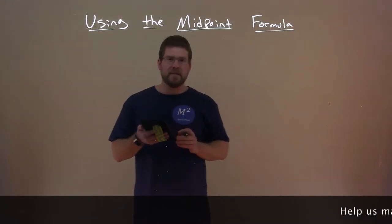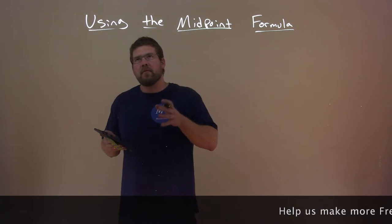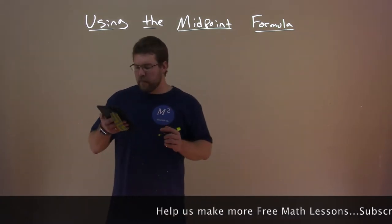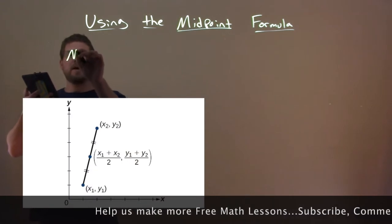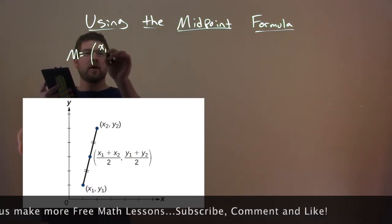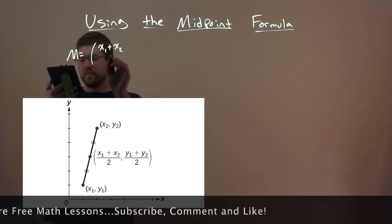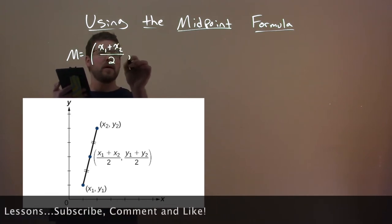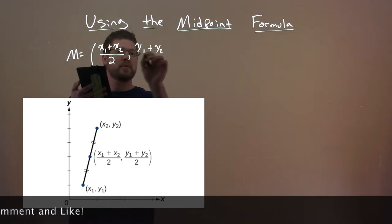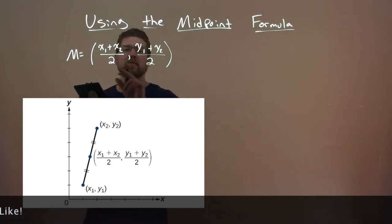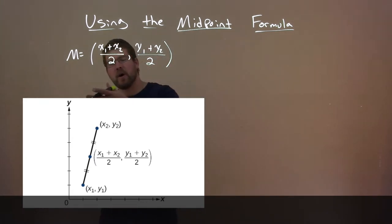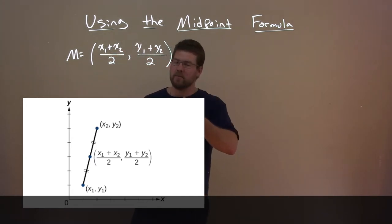So the midpoint formula is really finding the midpoint on a line segment. The formula for that is M equals x1 plus x2 over 2, comma y1 plus y2 over 2, and these are the coordinates of the midpoint given our two points x1, y1, and x2, y2.